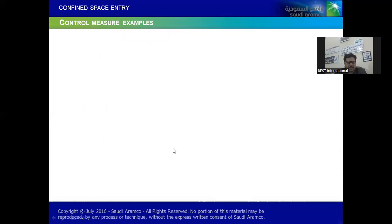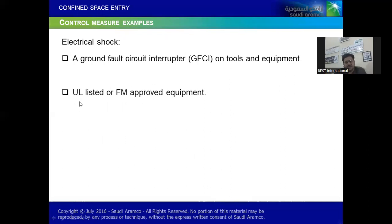A few more control measures examples, like electric shock - ground fault circuit interrupter GFCI on tools and equipment, and UL Underwriters Laboratories listed or FM Factory Mutual approved equipment. Code protection is critically important to understand. Then power failure resulting in loss of inside lighting operation should also be controlled.